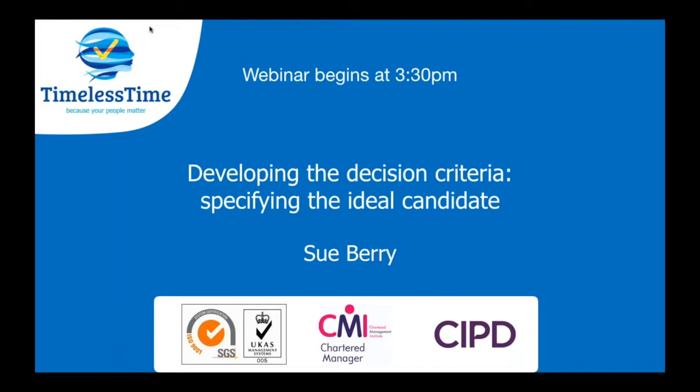Thanks, John. In this webinar, we're going to think about how we define our ideal candidates so that we can use this as a reference when we assess and test candidates. We're going to look at GMA, general mental ability, and think about person-environment fit, and discover why these impact on job performance. We'll also think about how a job description can be used to determine the required competencies and behaviours, and look at ways that decisions can be made when recruiting people.